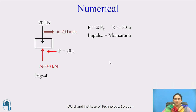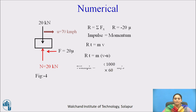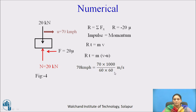Applying the impulse-momentum method: R·t equals final momentum minus initial momentum. The initial velocity is given in km/h, so we convert: multiply by 1000 to convert km to meters, and divide by 3600 to convert hours to seconds. Therefore, 70 km/h equals 19.44 m/s, which is the initial velocity.